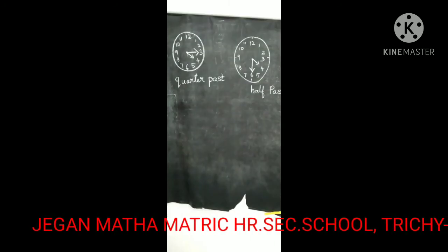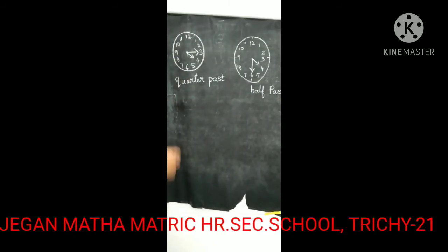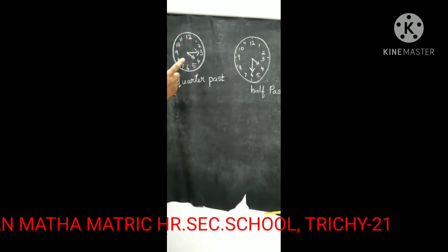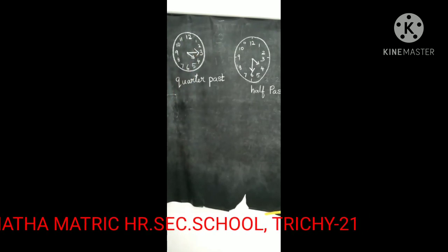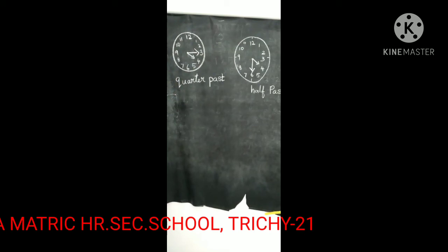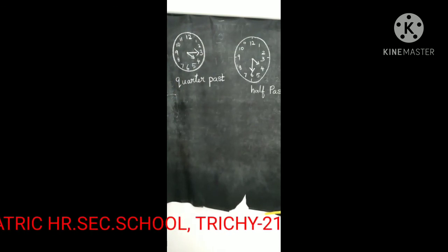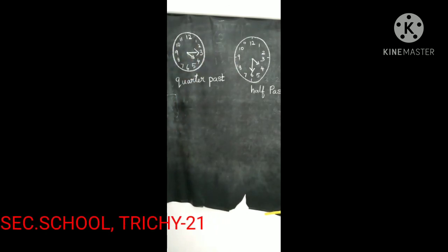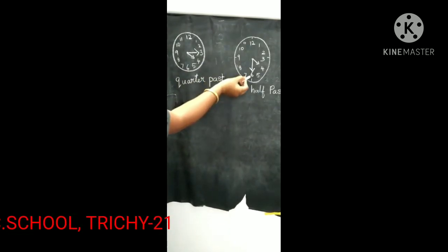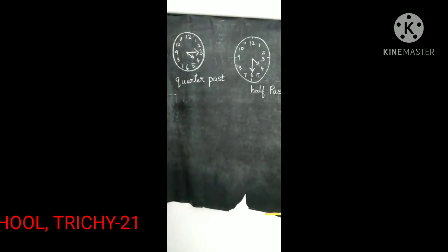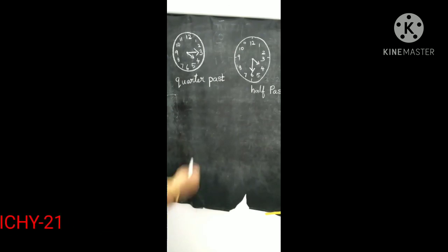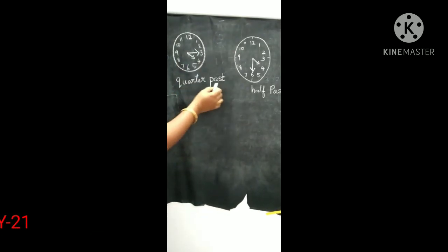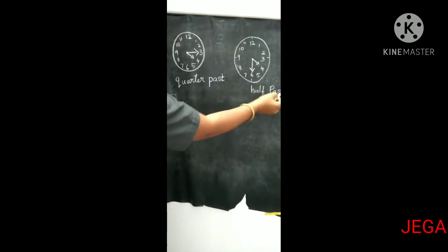Let's see how to read a time. The hour hand is on 4 and the minute hand is on 3. The time is read as quarter past 4. And when the minute hand is on 6, it is read as half past 4. So, when the minute hand is on 3, you read it as quarter past — quarter past 4 or 5. And when the hand is on 6, it means half past 4.